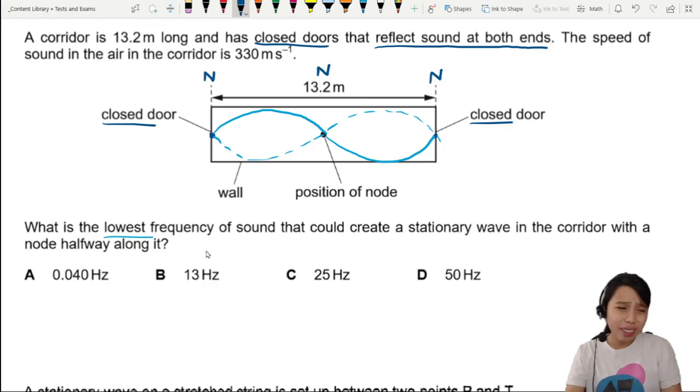How do we find the frequency though? We have velocity, that's good. We need frequency. We are missing lambda.